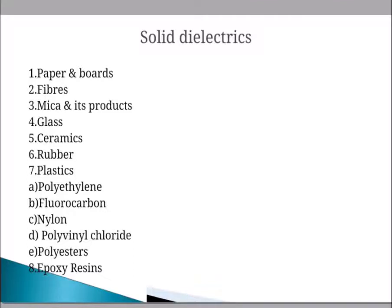Rubber is a natural or synthetic vulcanizable high polymer with high elastic properties. The electrical properties of rubber depend on the degree of compounding and vulcanizing. Chemical changes due to aging, moisture content, and variation in temperature and frequency have substantial effects on rubber's electrical properties.